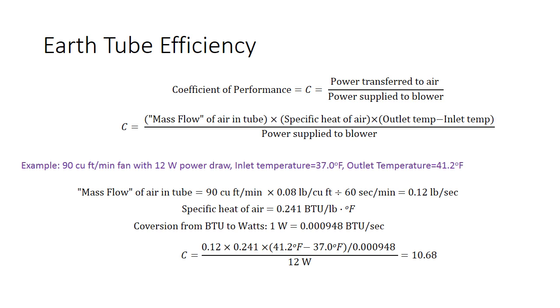Specific heat of air, you can look this up online, is 0.241 BTUs per pound degree Fahrenheit. We're going to want to convert from BTUs to watts. The conversion factor, a watt is a unit of energy or heat per unit time. That conversion factor is 0.000948 BTUs per second equals one watt.